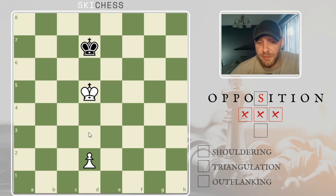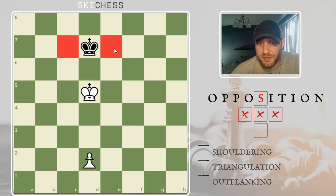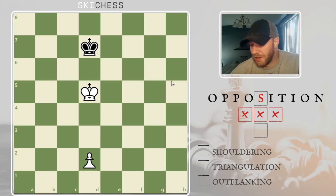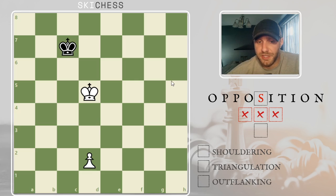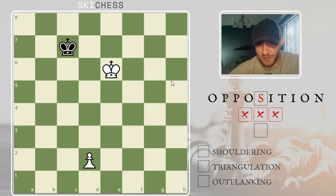White had distant opposition earlier on — we'll go over distant opposition in a minute — but here's your direct opposition. Black cannot enter the position. Black has to either step off to the side, one of the back squares, or basically retreat. So white has the opposition here. Black steps off to the side, and white steps off to the side. Usually when taking advantage of the opposition, that's exactly what you're going to do — step the opposite direction.